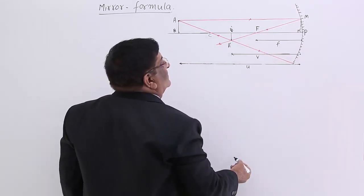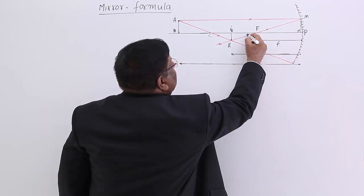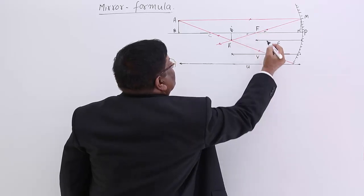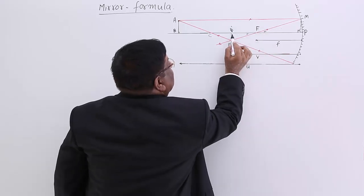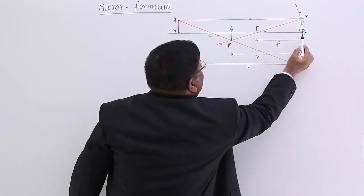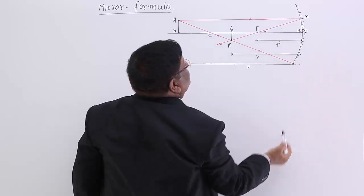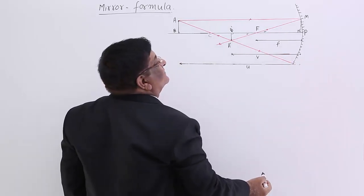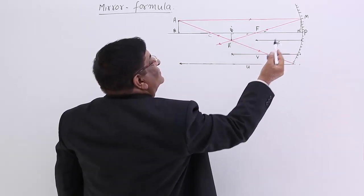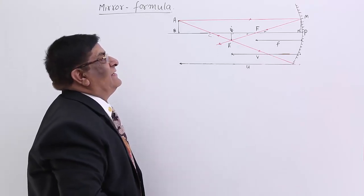Why are these similar triangles? These angles are equal to each other — opposite angles. This is a right angle, and this is a right angle, so the third angle has to be equal as well. So they are similar triangles.